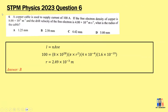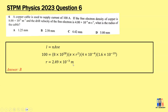A copper cable is used to supply a current of 100 A. Given the free electron density of copper and the drift velocity of the free electrons, what is the radius of the cable? This is straightforward — use the formula I = NeAvd. We have current = 100 A, electron density, area = πr², drift velocity, and electron charge. Solving the equation, the radius is approximately 2.49 × 10⁻³ m. The answer is B: 2.5 mm.